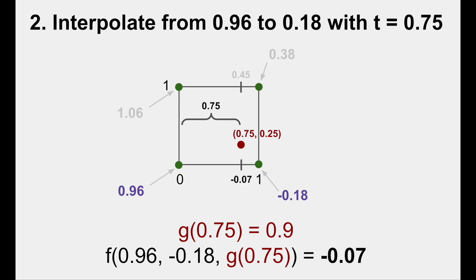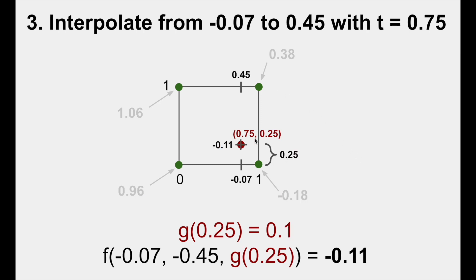Then do the same thing on the bottom. Can you guess what's next? To get our final value of our Perlin noise at this point, interpolate the bottom and top interpolated values with t equals the distance from the y value of the point to the y value of the bottom left corner. That's it.